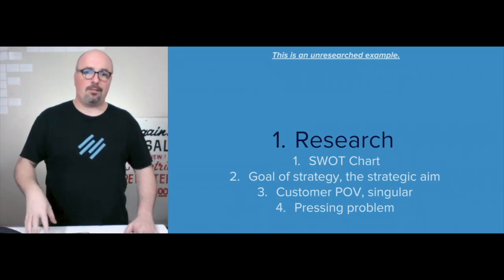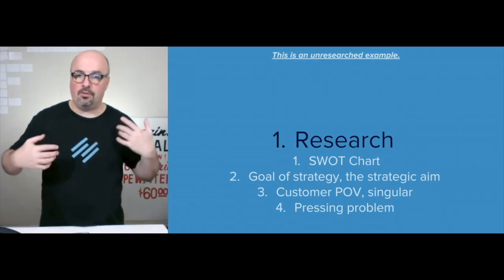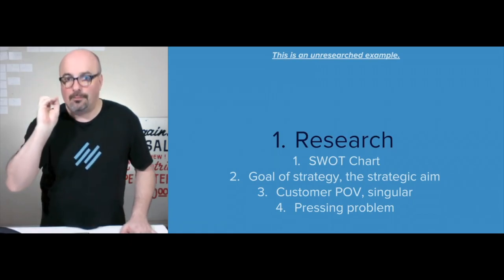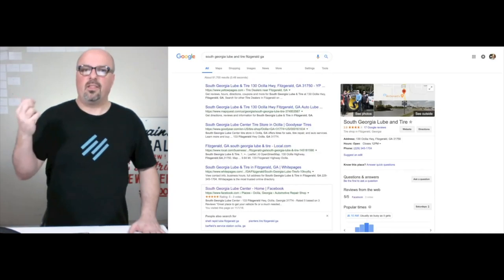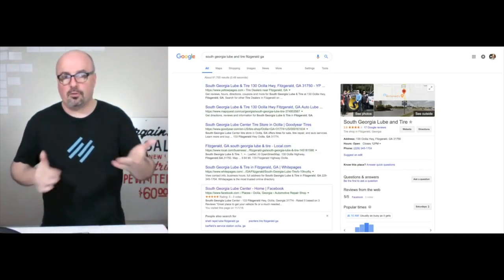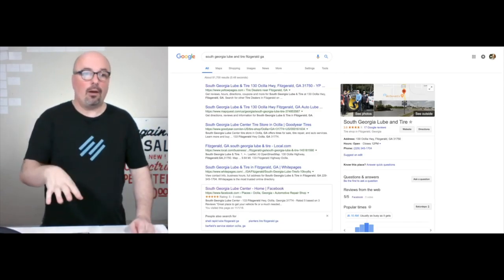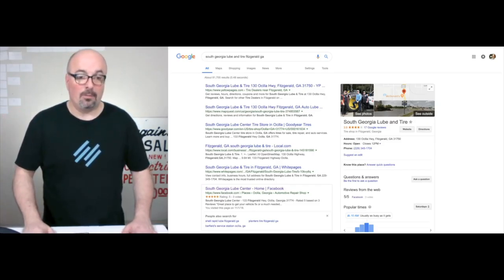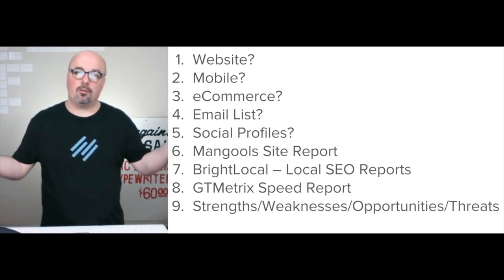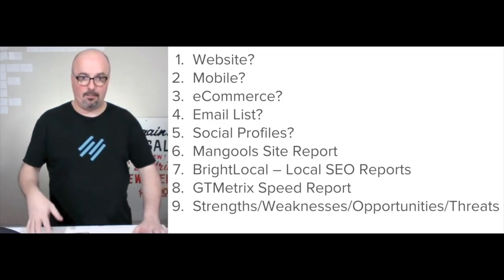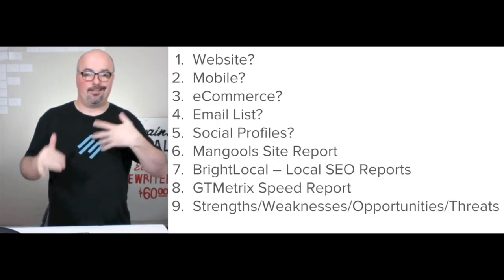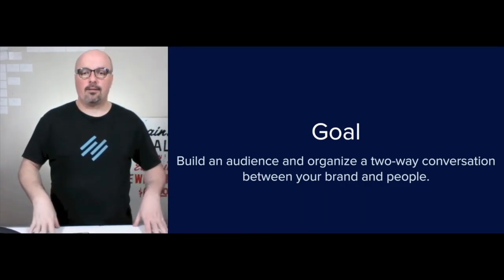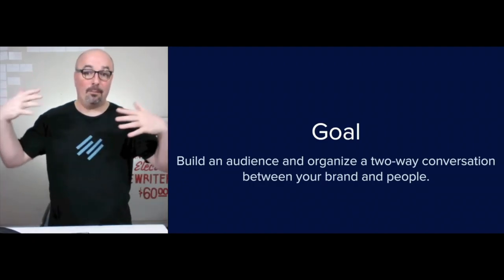We start with research. This is an unresearched example. The point of the initial research is to put together a SWOT chart — strengths and weaknesses, opportunities and threats, specific to the brand. A strategy is a plan of action to achieve an overall aim. The customer point of view is singular — always maintain that individual perspective. The first thing I do is Google it. South Georgia Lube, Fitzgerald, Georgia — there isn't a website. However, they are on Yellow Pages and MapQuest, Google has 17 reviews, and Facebook has three votes with a five-out-of-five rating. We're putting together a living document, and part of that is the SWOT, which you'll want to update over time.